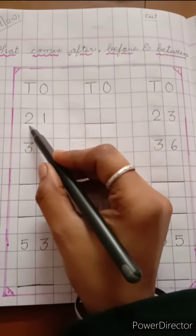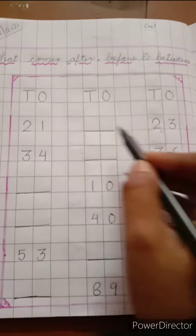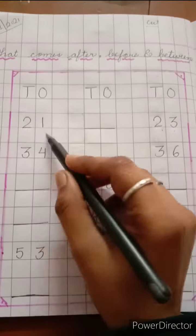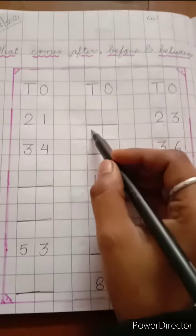So, you can see what number is this. This is 21 and this is 23. So, what comes between 21 and 23? What do you say? Okay?